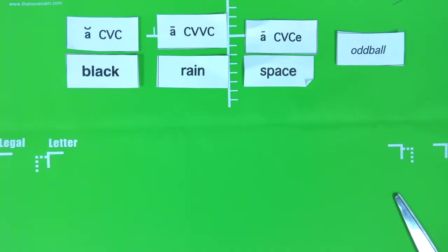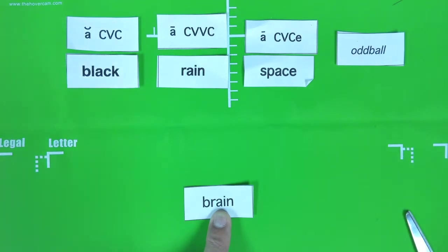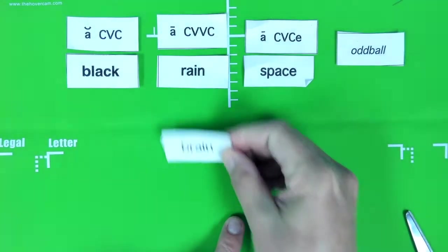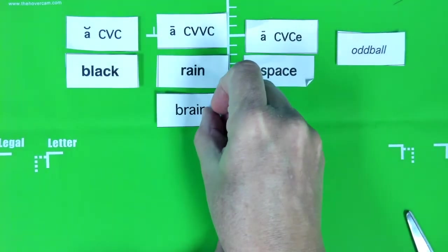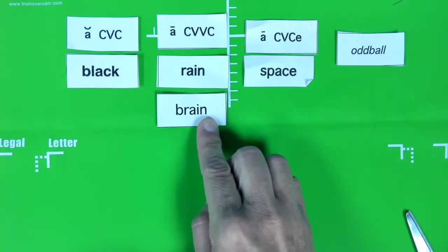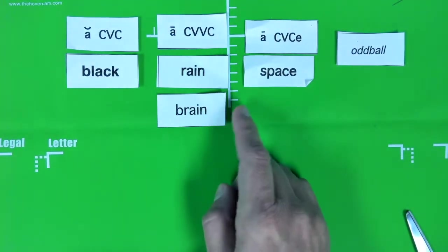Let's look at the word brain. When I look at the word brain, I see the A. But I also see that there is another vowel with the A. That's the I. And I know that when two vowels are together, the first one says its name. So this is going to say A. So this is brain. So where am I going to put that? I know. I'm going to put it right here under rain. Because this is a consonant, vowel, vowel, consonant word, and it says long A.